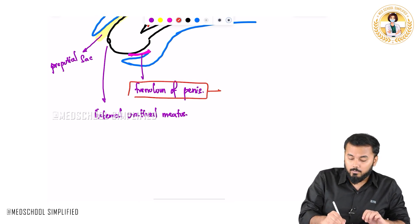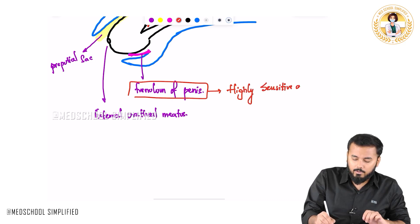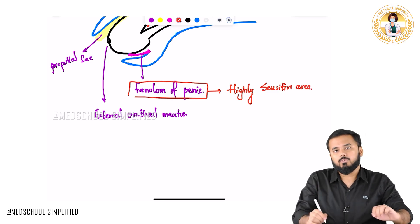Out of all these parts, the most important part you need to remember is the frenulum of the penis. Why? Because the frenulum of the penis is a highly sensitive area.